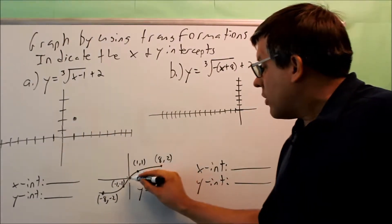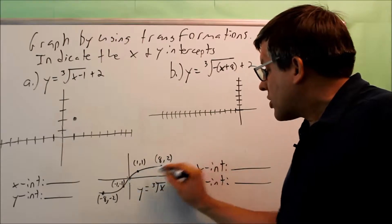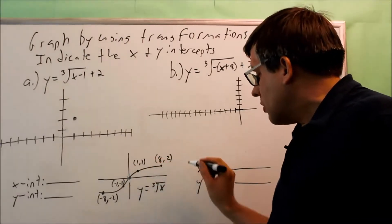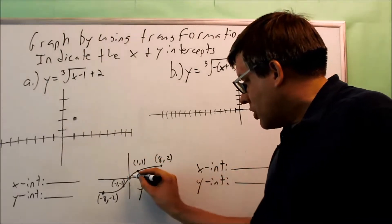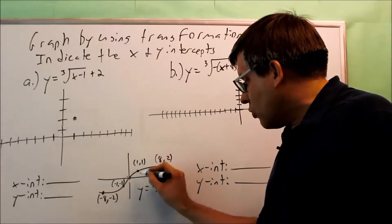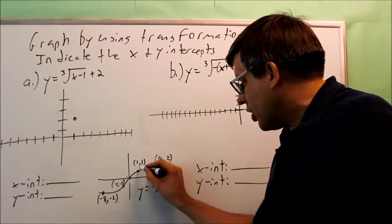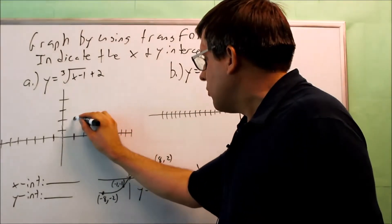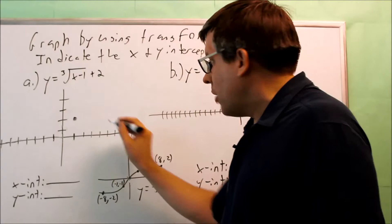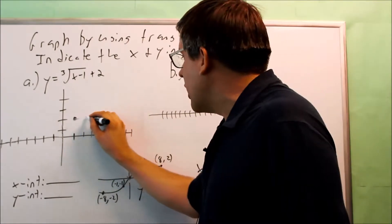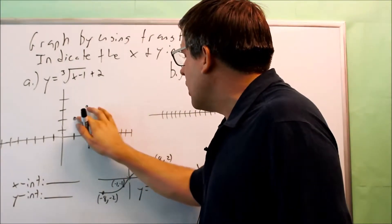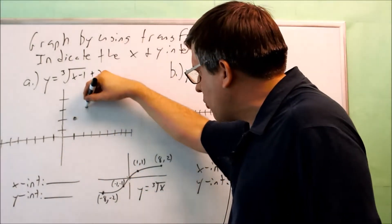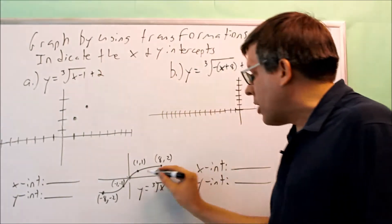I want to get the other points, so let's go this direction first. To get to one one, I'm going to go one to the right and up one unit from my starting point. Right here is going to be the next point on my graph.